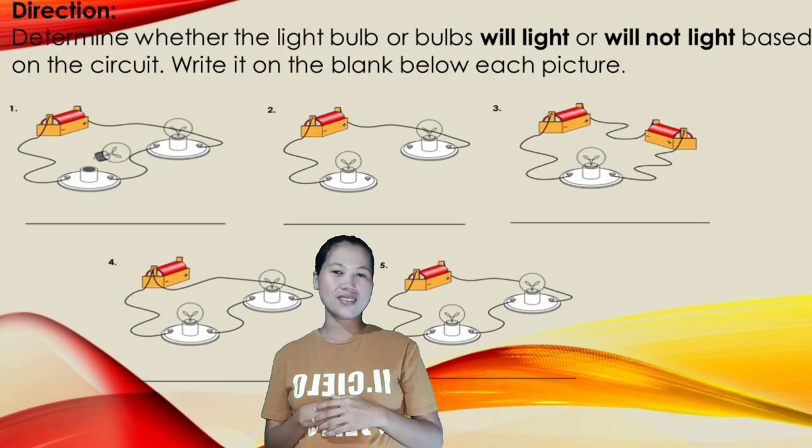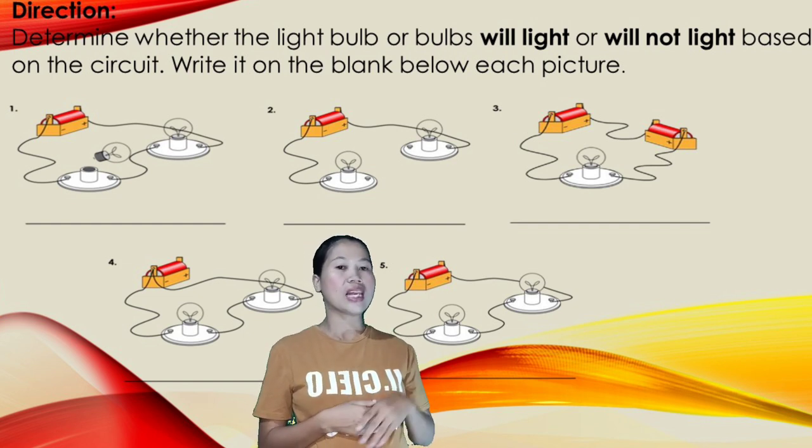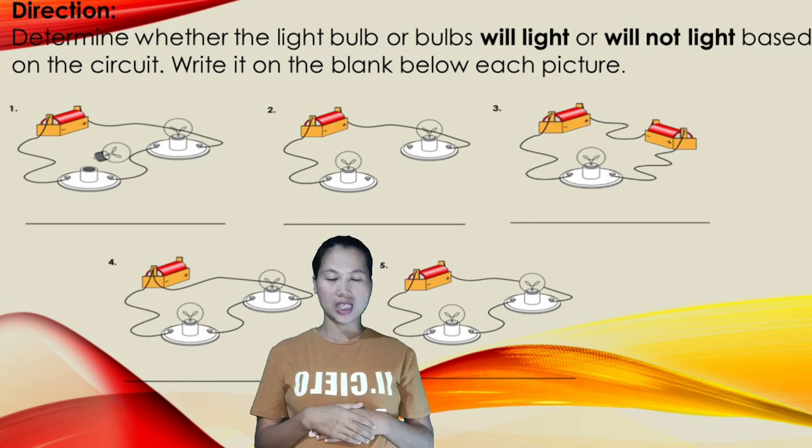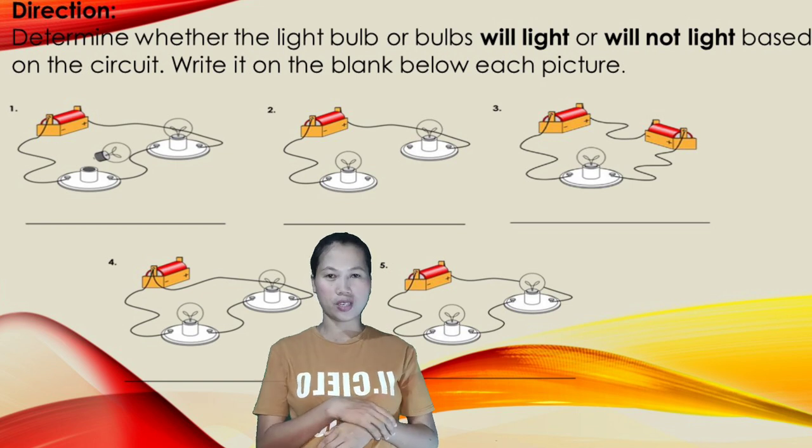For activity 1, you will indicate whether the light bulb or bulbs are lit or not lit based on the circuit. Write it on the space below the picture.